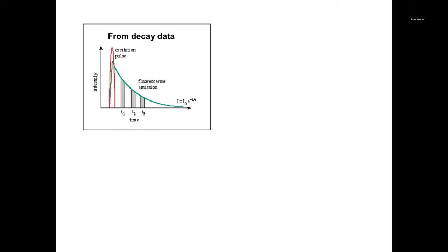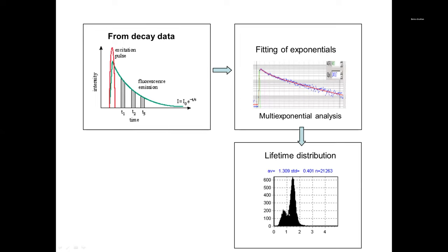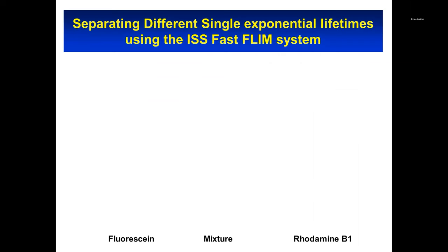In the time domain, we have to solve a multi-exponential fit — not an easy thing because you have to know where to start — and then get the lifetime distribution. In the phasor plot, you first transform the decay into the phasor, then get the lifetime distribution. This is a very different process because it does not require fitting. In the time domain you require a fit to obtain the lifetime distribution; in the phasor approach you do not.